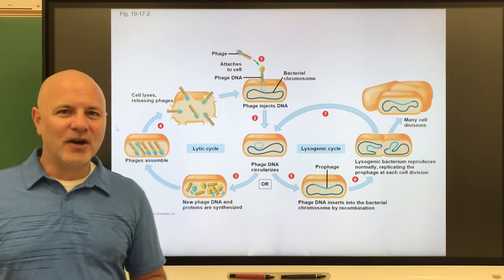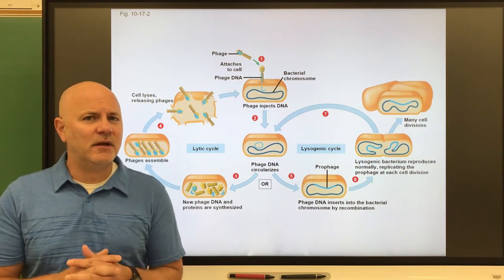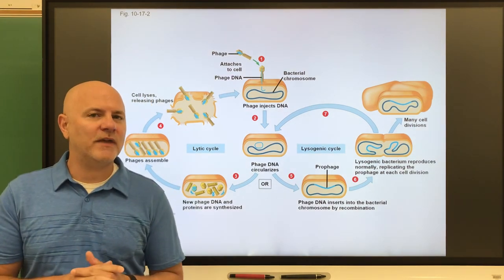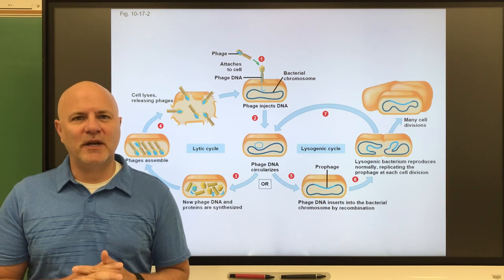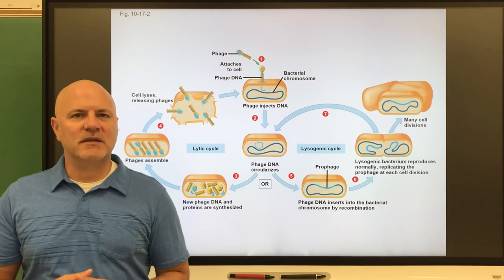Herpes simplex two, genital herpes, it's not so easily seen because we typically wear clothing over that. About 20 to 25 percent of the population has that. Once again, some people are symptomatic and some people are asymptomatic as well.